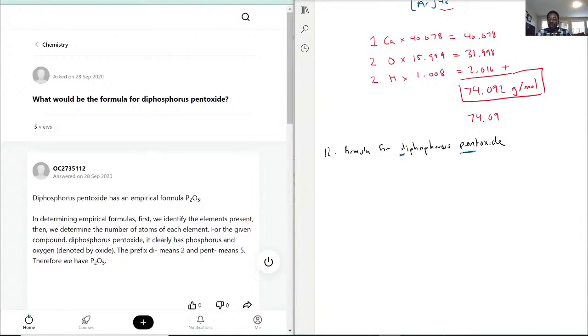Right away, because you have two prefixes, that would actually give you a hint that this is going to be a molecular compound, and not an ionic compound, or you'd more likely call it a covalent compound, and then you say whether it's polar or nonpolar.